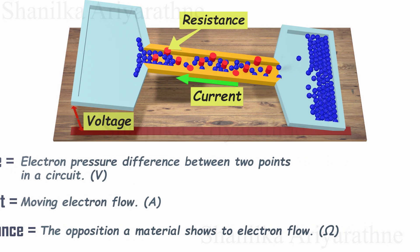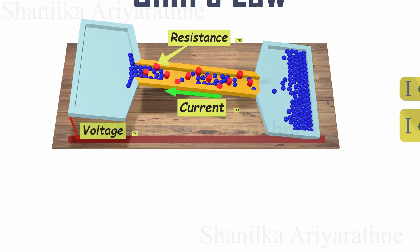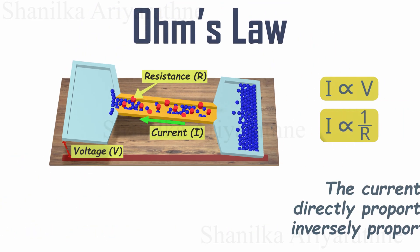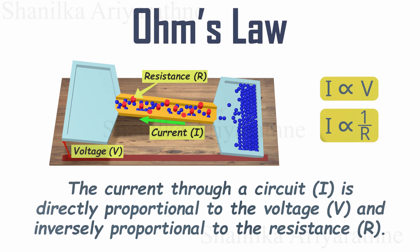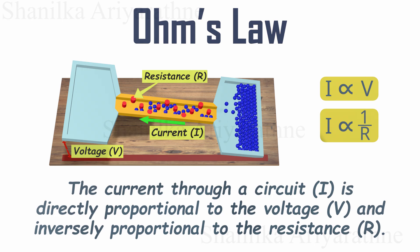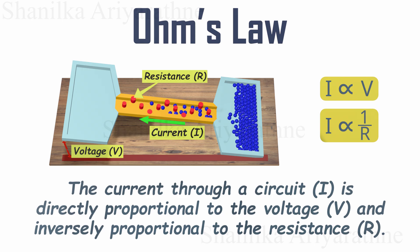Ohm's law describes the relationship among these three quantities. In simple terms, Ohm's law says the current through a circuit is directly proportional to the voltage and inversely proportional to the resistance.